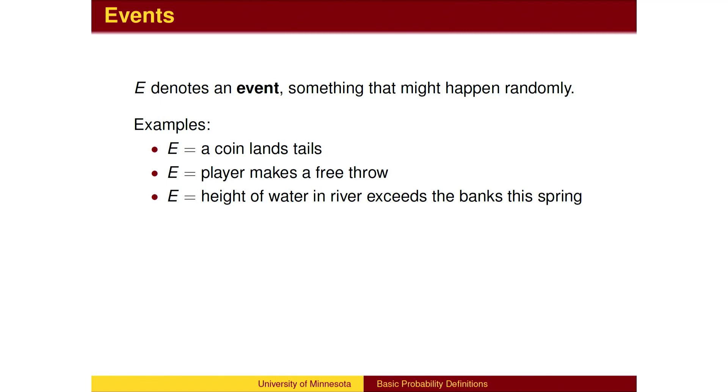We will want to assign a probability between 0% and 100% to events, like the probability that the Red River will overflow its banks and flood Moorhead, Minnesota this spring.